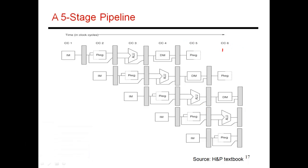I'm going to use the same example where we're doing R1 plus R2, writing the result into R3. The values are 5 in R1 and 7 in R2, so I'm producing the result 12 into R3. The consuming instruction is trying to do R3 plus R4, writing the result into R5. With R4 equal to 9, I want to produce the result 21.